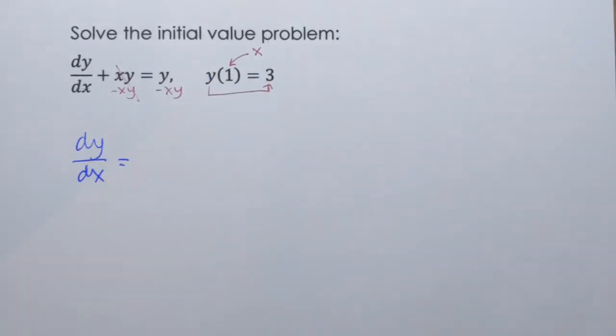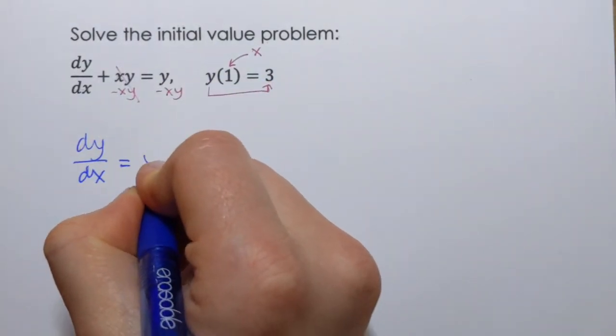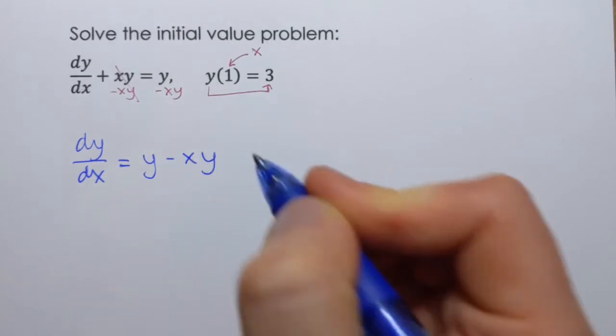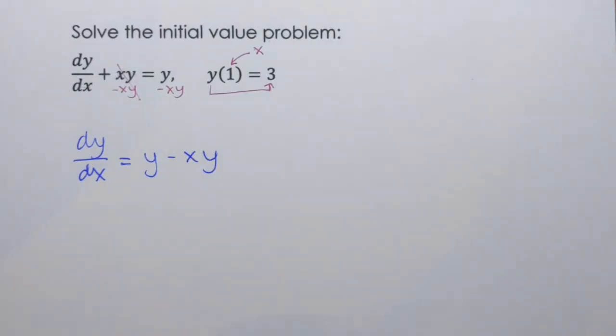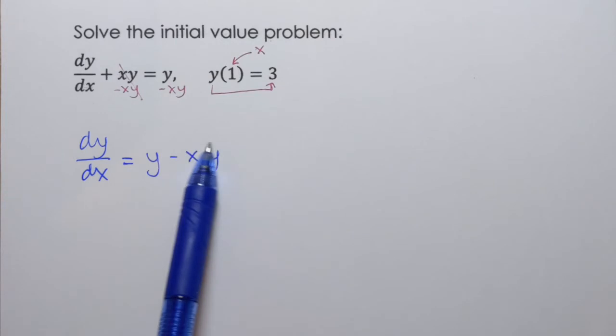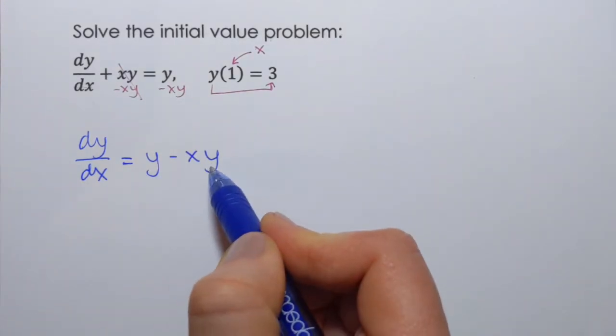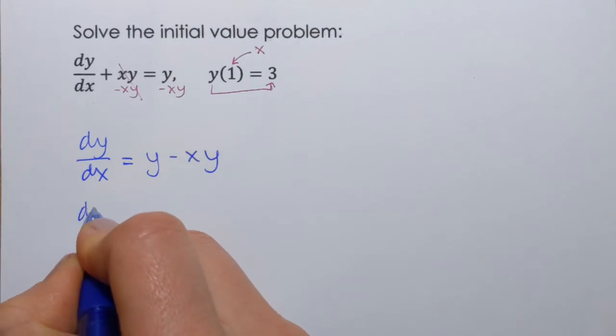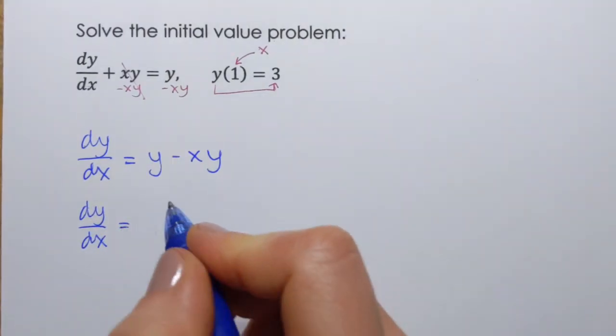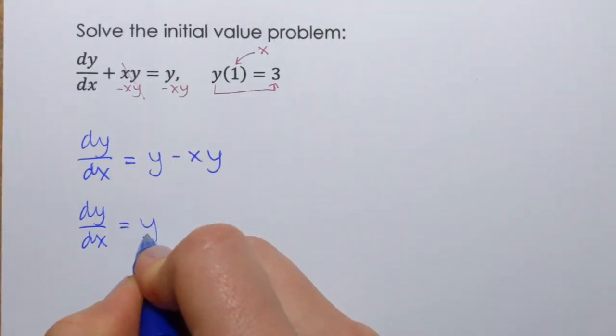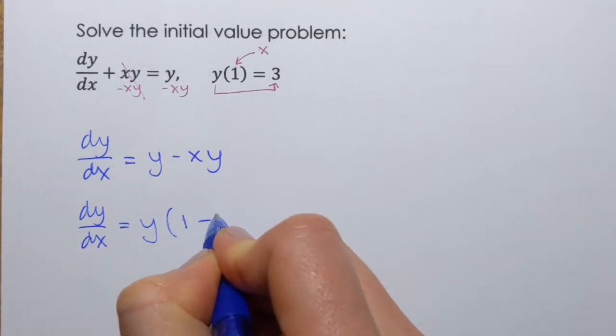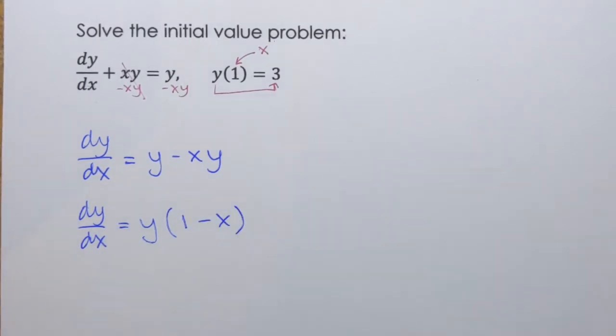Okay, so I have y minus xy on the right-hand side. And now as I'm trying to separate variables, the useful step will be to factor the right-hand side. So I'm gonna factor out y, since each term contains y. So dy/dx equals, and as I factor out y, there will be 1 minus x left inside the parentheses.